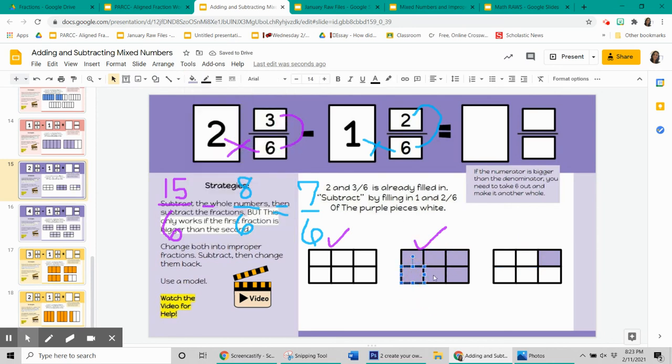you do indeed get 7 sixths. 1, 2, 3, 4, 5, 6, 7. But that's an improper fraction, because 7 is greater than 6.